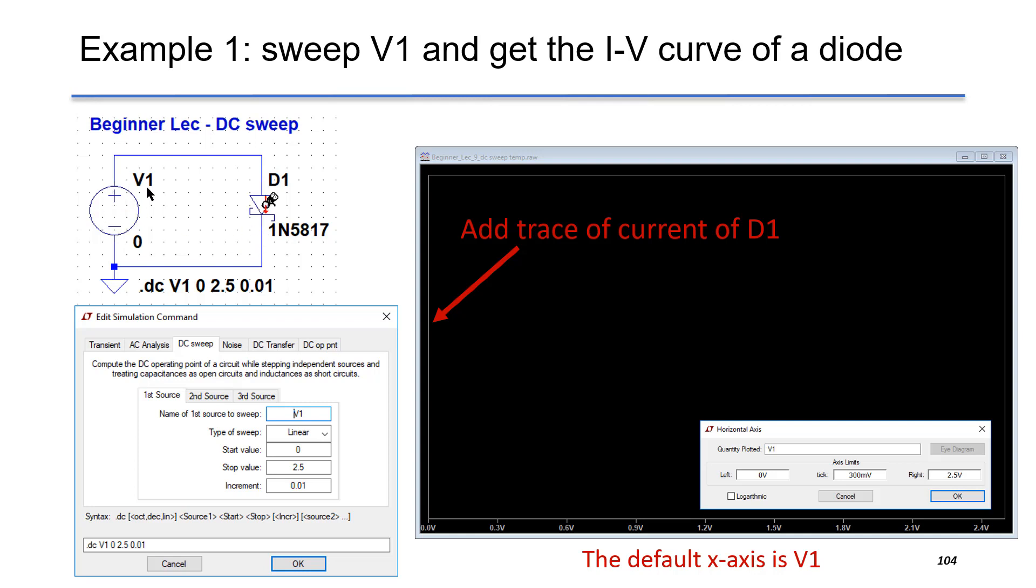So in this case, V1 is the forward voltage drop of D1. If you build this schematic, then you can go to the edit simulation command, go to DC sweep.